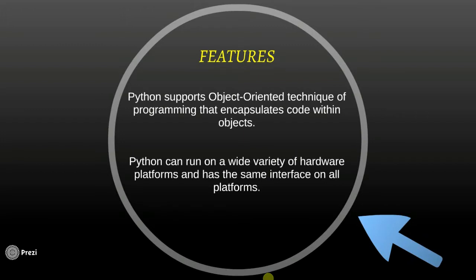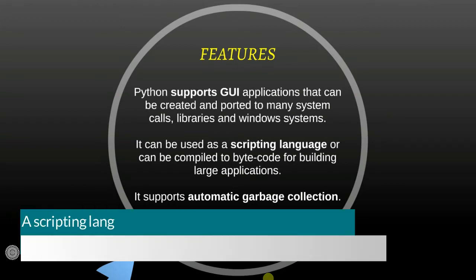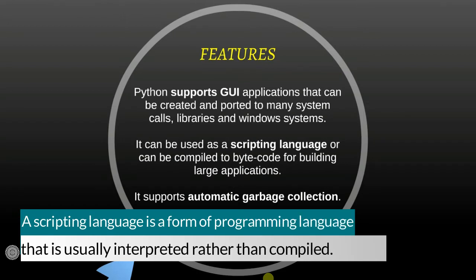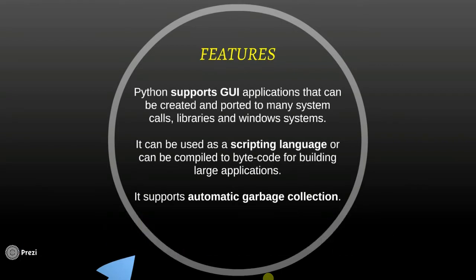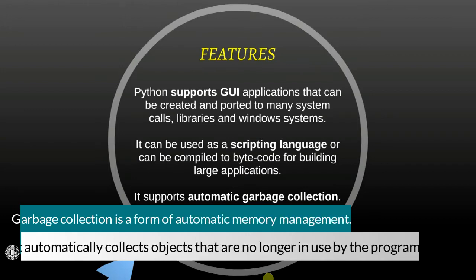Python also supports object-oriented programming — I'll make sure to cover that in a future video. Python can run on a wide variety of hardware platforms and has the same interface on all platforms. It also supports graphical user interface applications that can be created using many libraries and Windows systems. It can be used as a scripting language — which is a form of programming language that is usually interpreted rather than compiled — or it can be compiled to bytecode for building large applications.